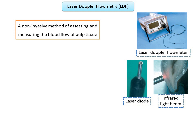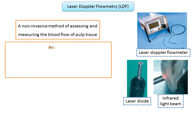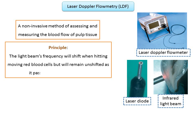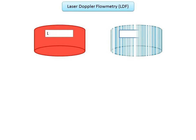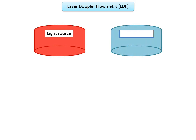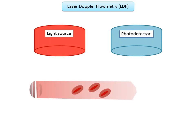Now let's take a look at the principle of laser Doppler flowmetry and how it functions. The Doppler principle states that the light beam's frequency will shift when hitting moving red blood cells, but it will remain unshifted as it passes through static tissue. The red cylinder here is the light source; red light is emitted, and if scattered off stationary tissue or cells, there is no shift in the light spectrum.